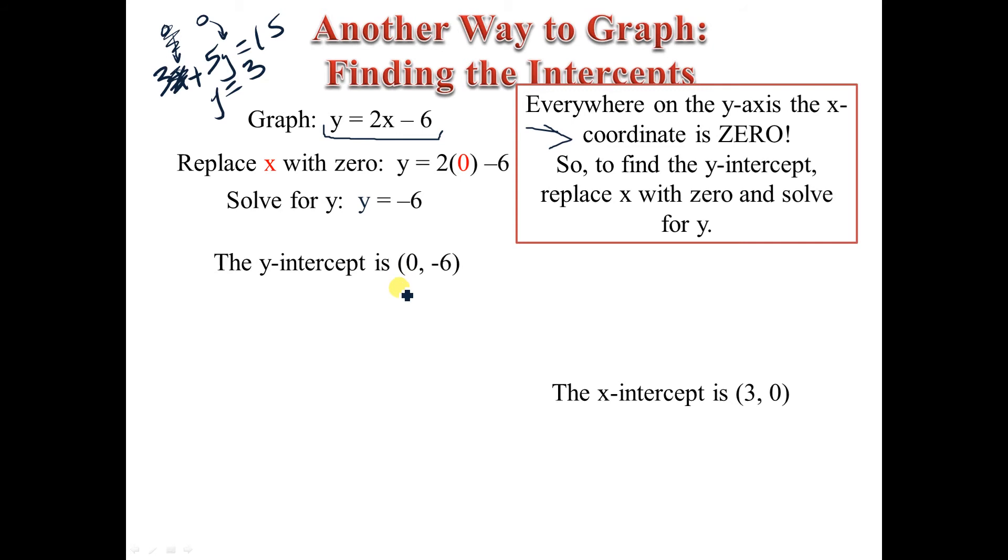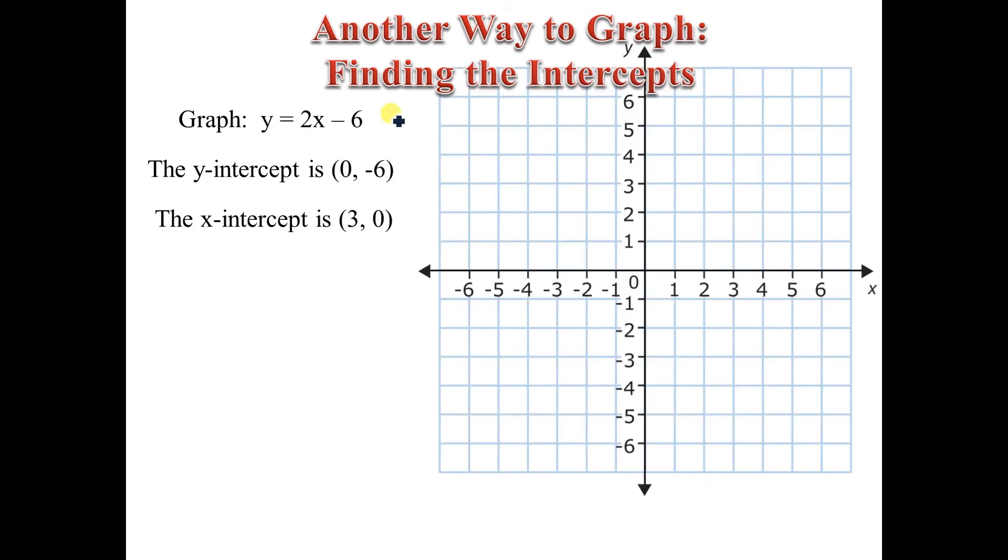So, we have our two intercepts. We have 0, negative 6, and we have 3, 0. So, let's go ahead and graph these. So, 0, negative 6 is going to be there. 3, 0 is over here. And, we have two points. We know all of the solutions to this equation are going to line up. There's no exponent. It's a linear equation. So, all I've got to do is connect the dots, and I'm done.